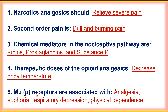Fifth, mu receptors are associated with analgesia, euphoria, respiratory depression, and physical dependence. This is the main mechanism of morphine, in which the opioid receptor plays a major role.